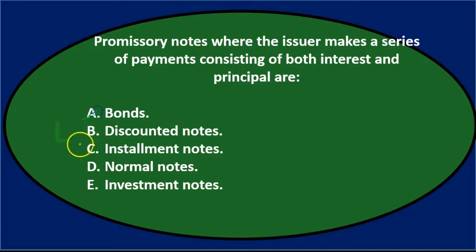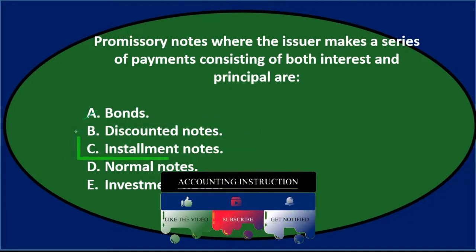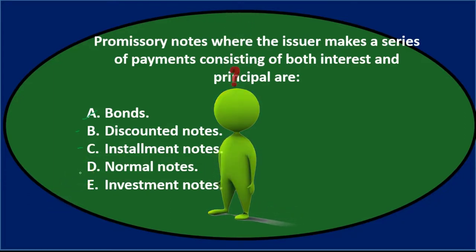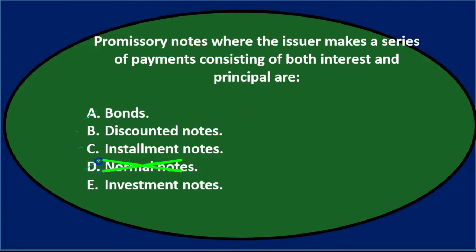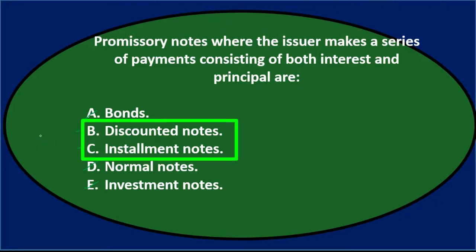Option b, discounted notes, sounds kind of reasonable so we'll keep that. Option c, installment notes, also sounds familiar so we'll keep that. Option d, normal notes — we don't usually call it a normal note, that's not really one of our terms. Option e, investment notes, doesn't sound like something we've dealt with much. So we can narrow it down between b and c — discounted notes or installment notes.